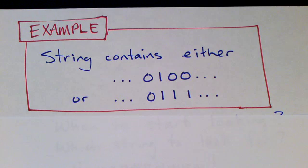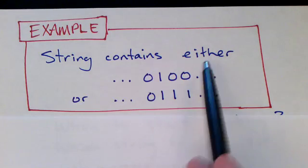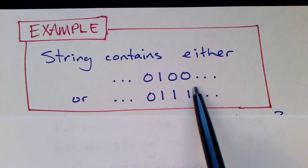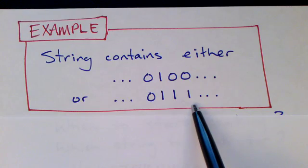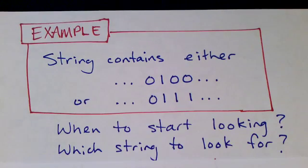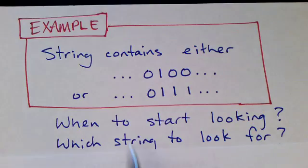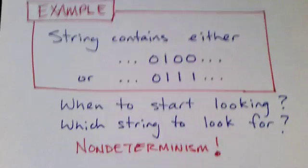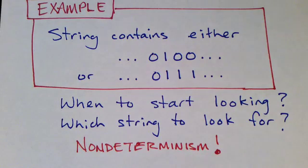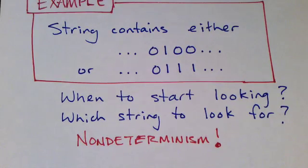Here's another example language that is regular. Every string contains either 0100 as a substring, or 0111 as a substring. The problem in building machine to recognize this language is knowing when to start looking for that, and more importantly, which string are you looking for. And this is a very excellent example for why non-determinism is useful and powerful and gives you some advantage.